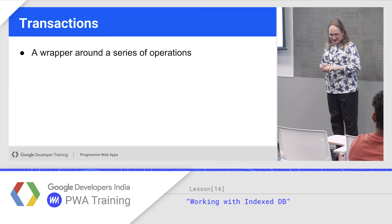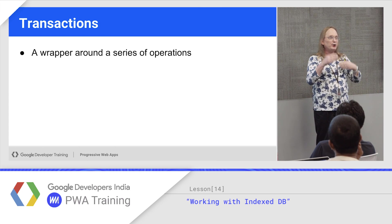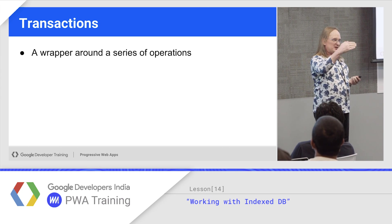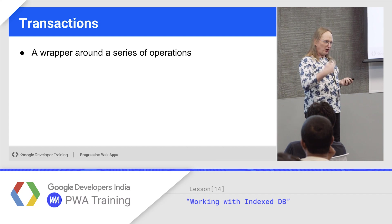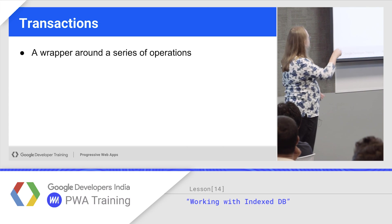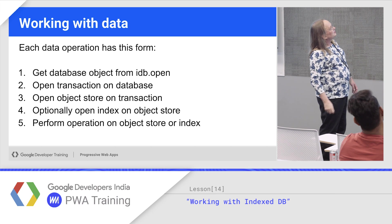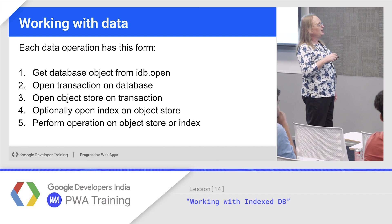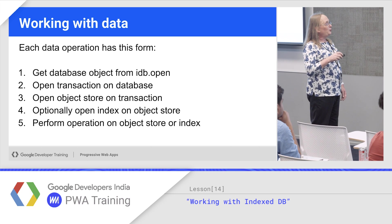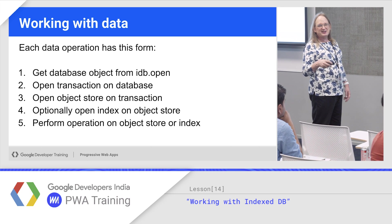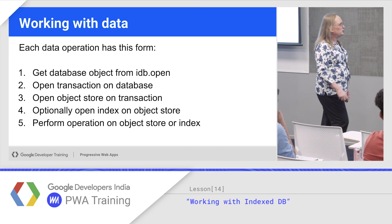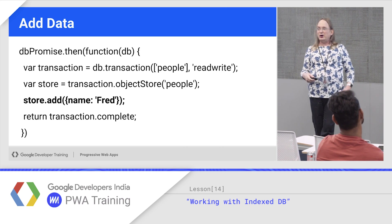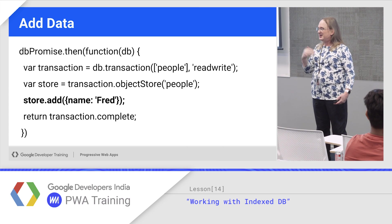IndexedDB has one really nice thing: it's transaction-based. A transaction is a wrapper around a group of operations — they either all execute together, or the database is rolled back. It's not optional. To do an operation, get the database object, open the database, ask for a transaction, open the object store on the transaction, open an index if you need one, and then do your operations. The advantage of all this work is consistency in the database — it's very hard to leave the database in an inconsistent state.